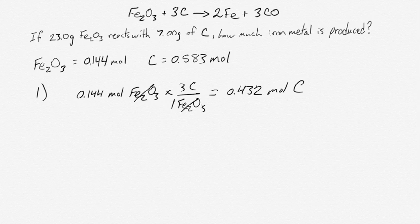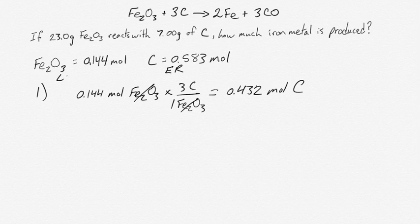Now, we have 0.583 moles of carbon, but we only need 0.432. That means carbon is our excess reagent, and it means the iron oxide, the iron 3 oxide, the hematite, is our limiting reagent.